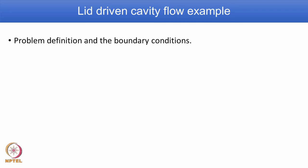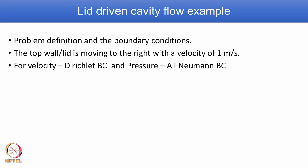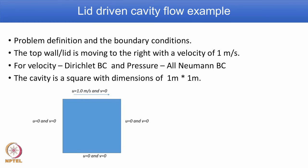For the lid driven cavity test case, the top wall is moving to the right at 1 meter per second. If using velocity to prescribe boundary conditions, you have Dirichlet boundary conditions. If using pressure, you have a Neumann type boundary condition. The cavity is a square with dimensions 1 meter by 1 meter. The Dirichlet boundary condition for velocity: u = 0, v = 0 on the walls.